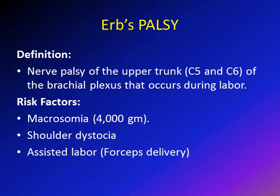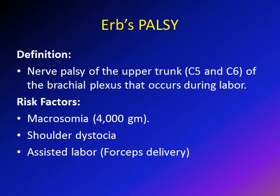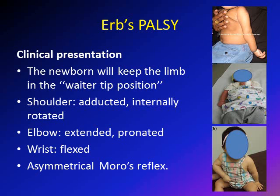Erb's palsy is affection of the upper trunk of the brachial plexus — C5 and C6 — occurring during labor, and is the most common type of obstetric brachial plexus palsy. Risk factors include macrosomia (newborn over 4,000 grams), shoulder dystocia requiring more traction, and assisted labor such as forceps delivery, which can cause compression over the brachial plexus.